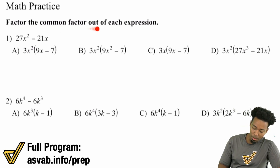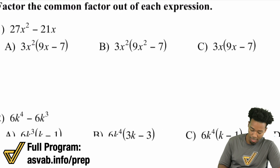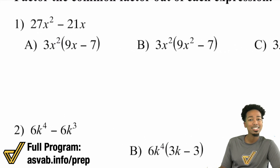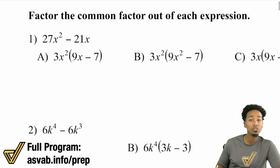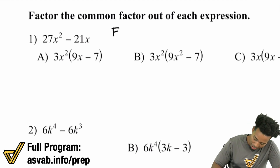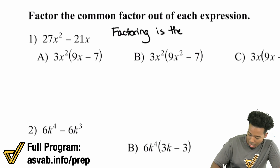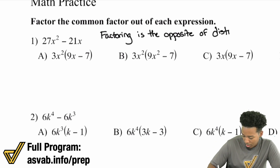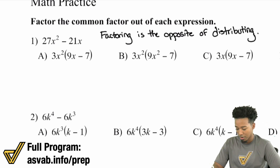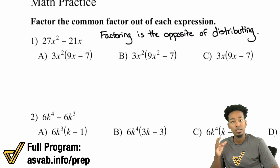We're going to factor the common factor out of each expression here. We have 27x squared minus 21x. So if there's something that you really need to know, it's this: factoring is the opposite of distributing. For all intents and purposes here, distributing — that's what this means at this level of math. So factoring is the opposite of distributing.